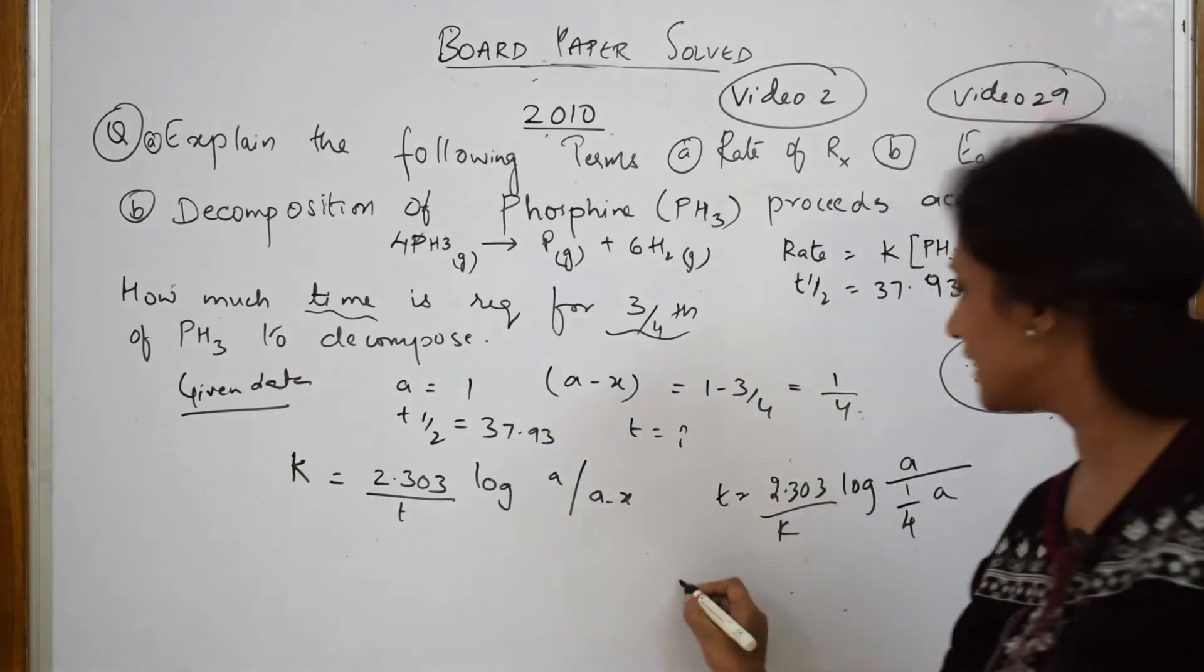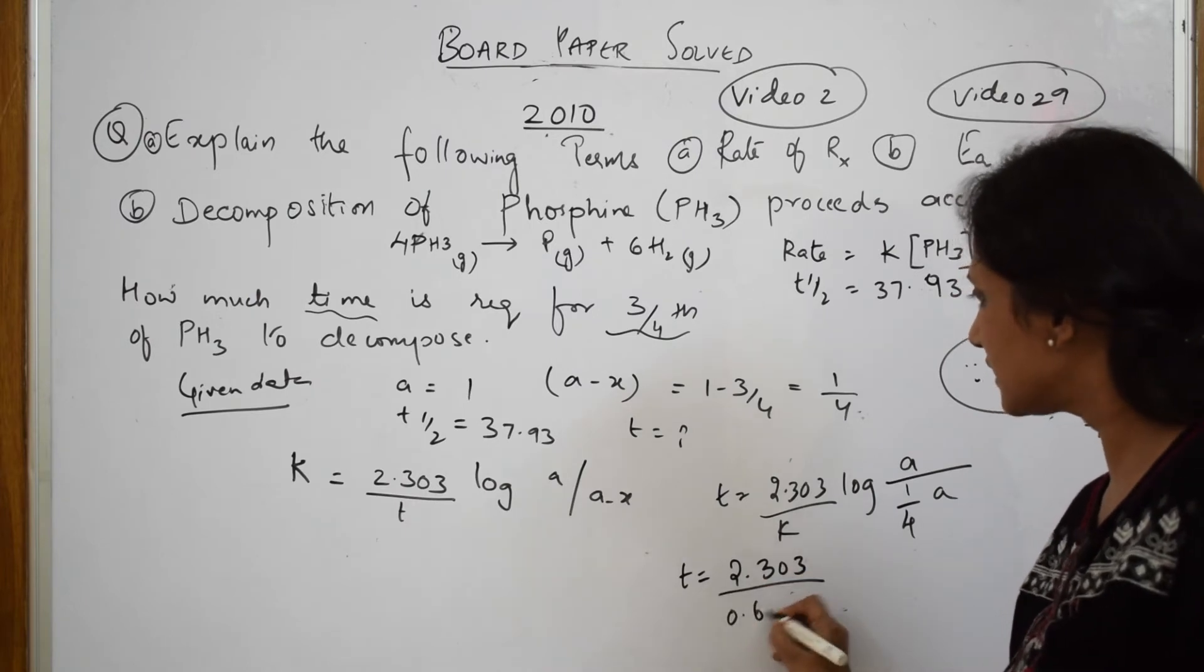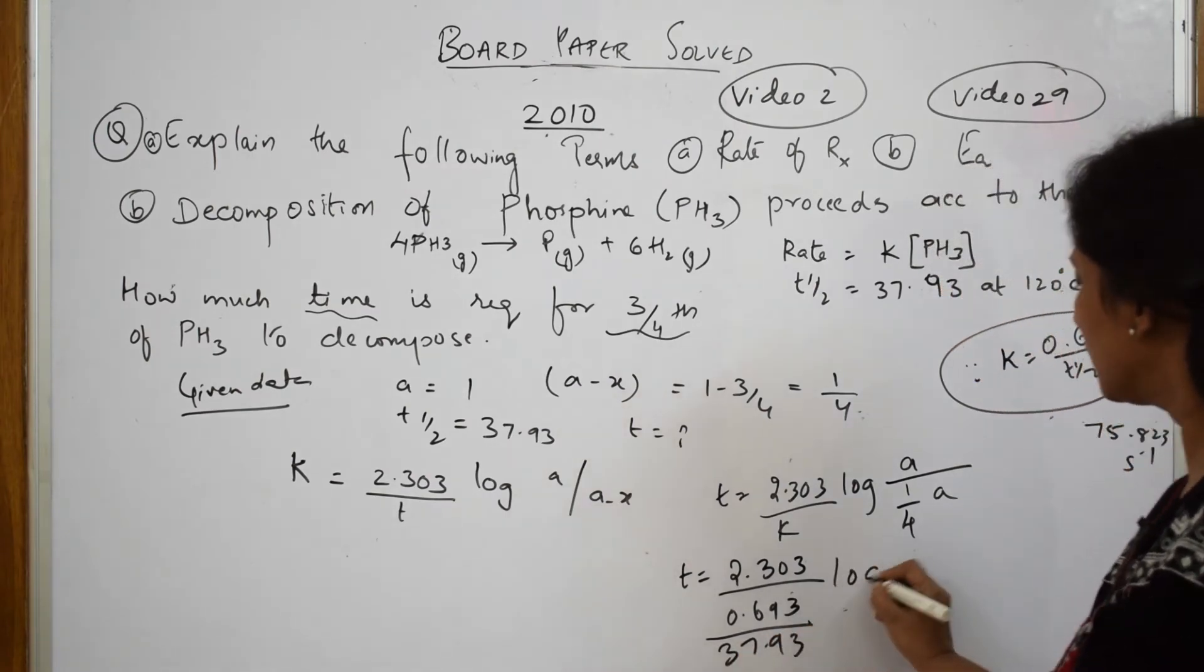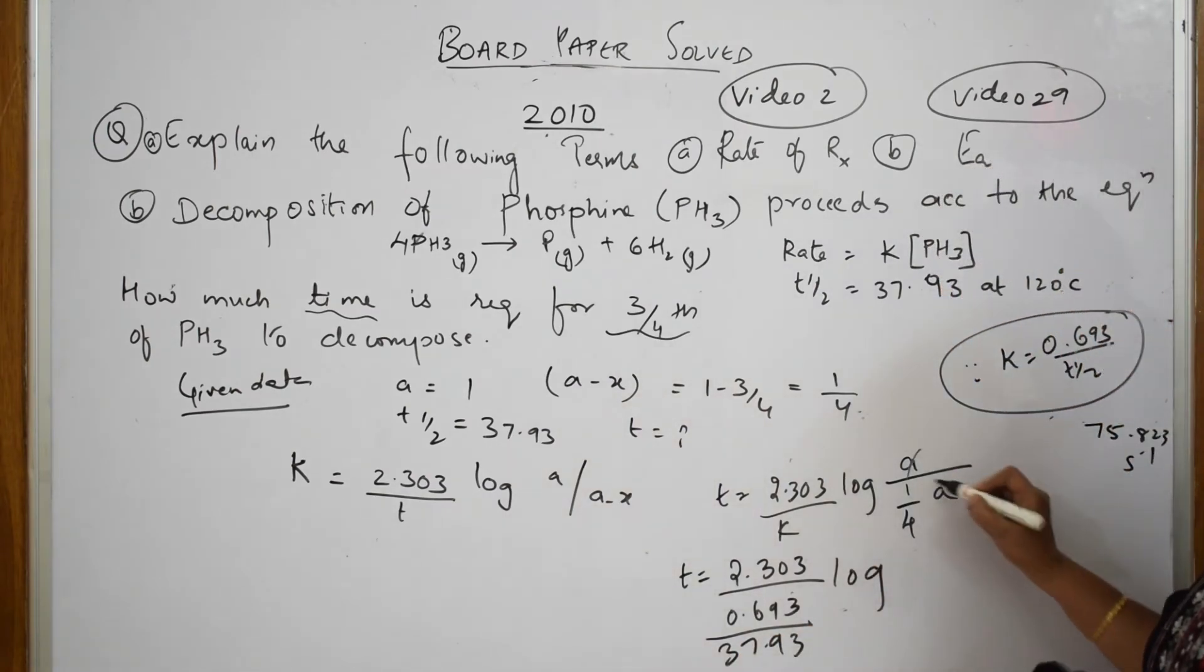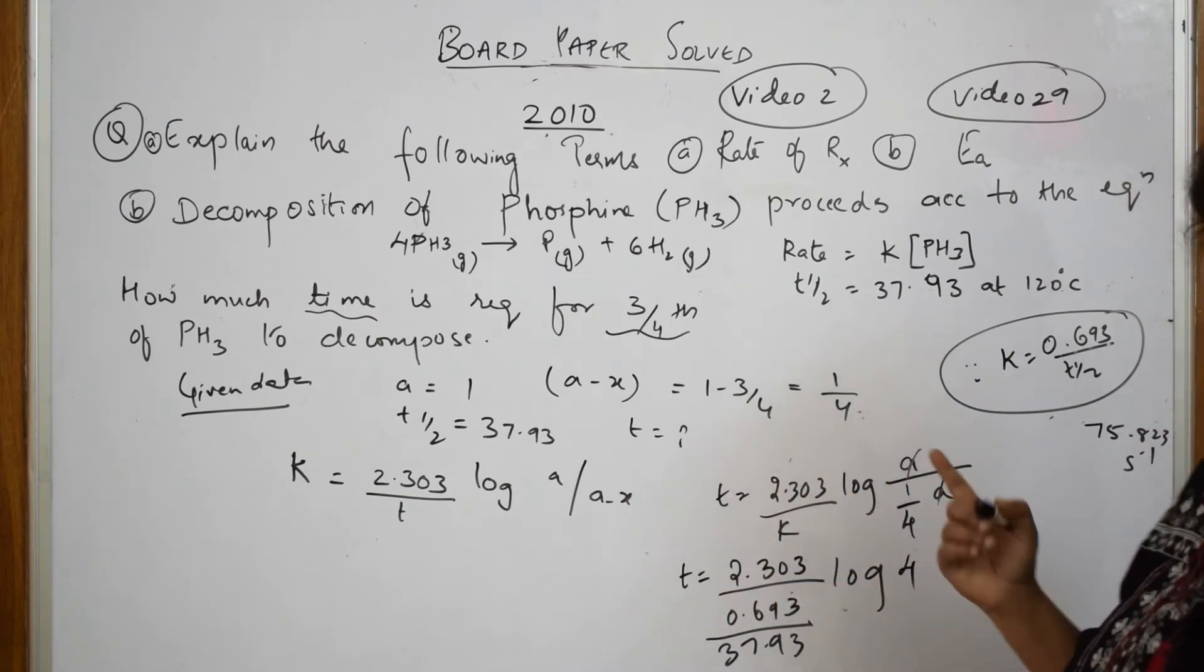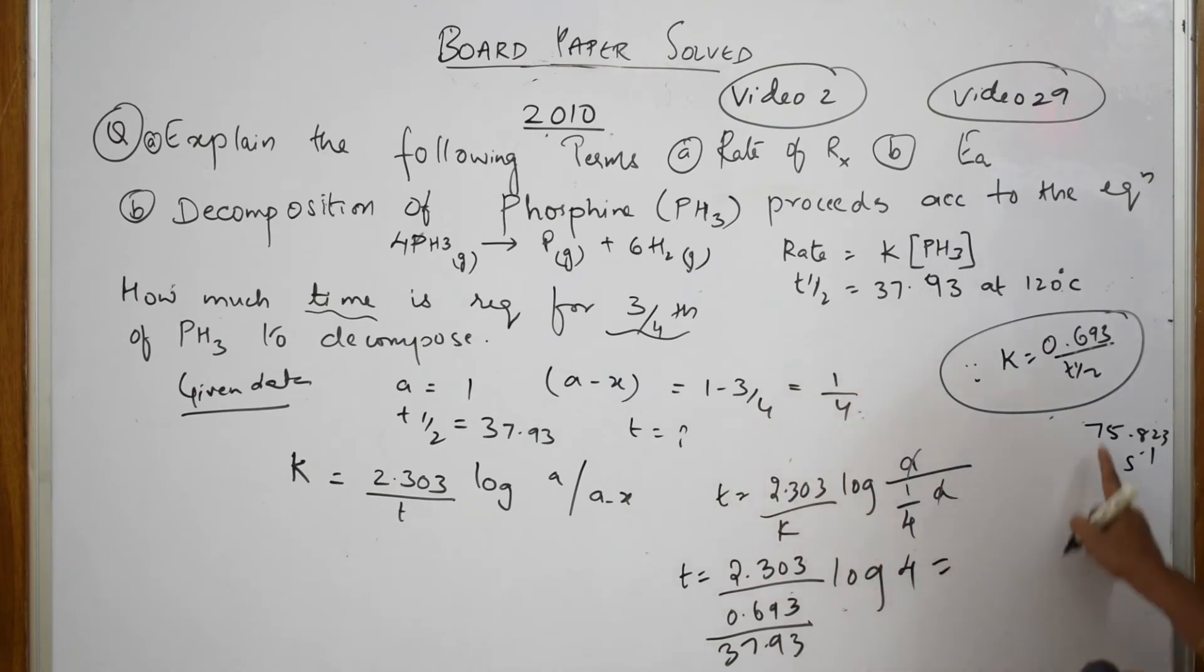So I can write the same as T is equal to 2.303 by 0.693 divided by 37.93 log. Now when I solve this, this becomes this and this gets cancelled. So this becomes log 4. You can just find, solve this whole thing. Log 4 has 0.60 something, some value. Substitute the whole thing. You'll finally get an answer of 75.823 seconds. This is the answer. So your T half we have already got. So this is your answer. Please solve it.